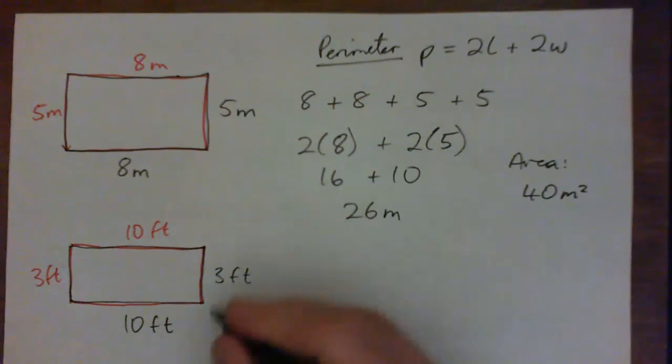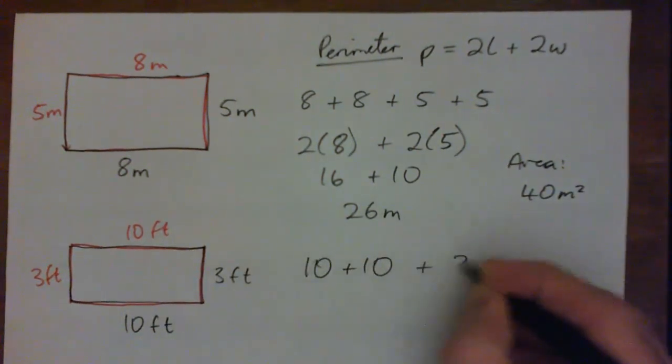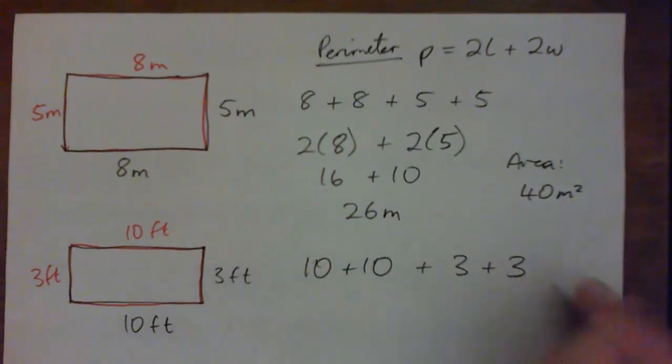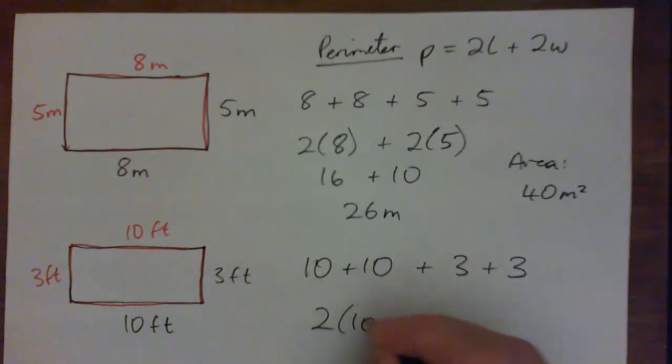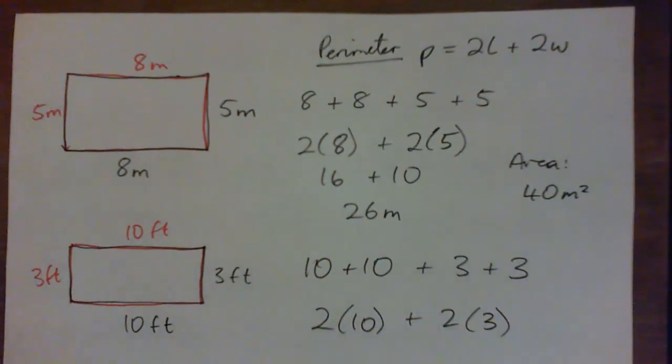So it's 10 plus 10, plus 3 plus 3. 2 lengths and 2 widths. Or 2 times 10, if you want to write it that way, plus 2 widths. I've done it two different ways just to show you.